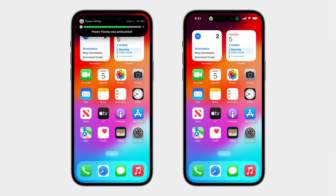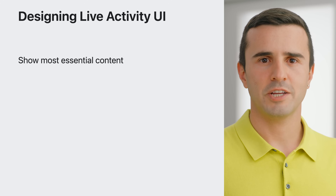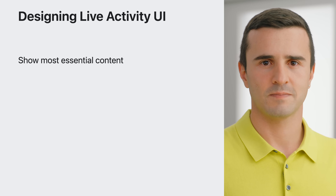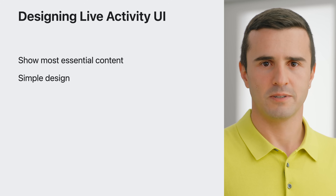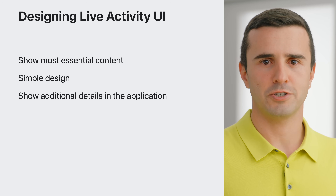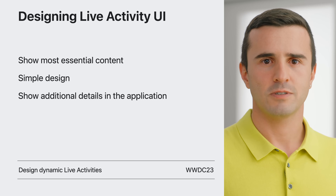In the end, my dynamic island UI looks simple and provides all the necessary information for the adventure. Now I'm ready to go on adventures with my favorite heroes and follow along with the simple yet immersive live activity UI that I just created. While designing your own UI, display only the most essential content in the live activity. Keep it simple and show additional details on your app when the user taps on the live activity. Check out Design Dynamic Live Activities for more information.